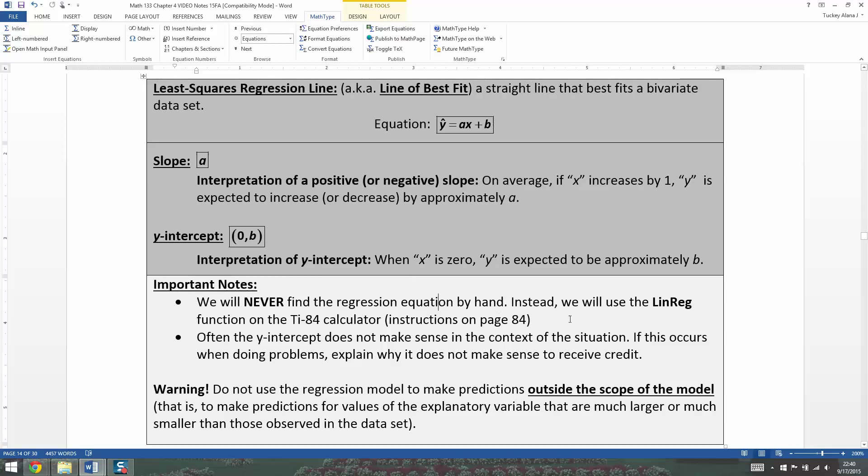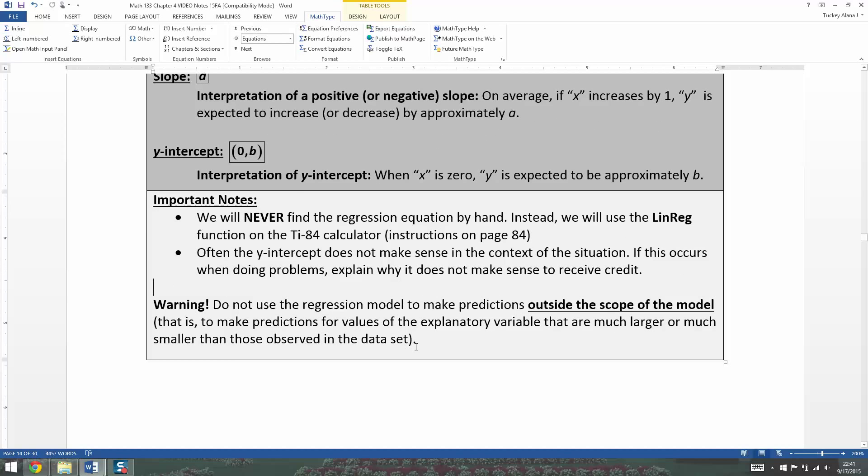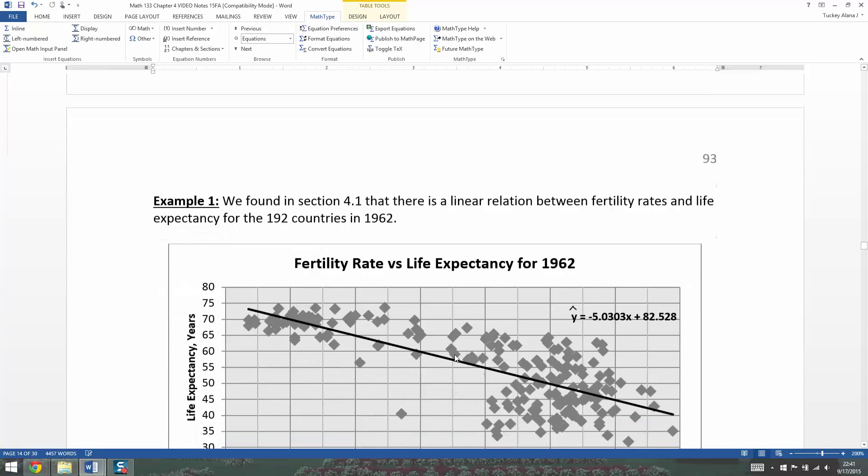Now, we in this class are not going to find this regression equation by hand. We're going to use the calculator to do it for us, the TI-84 calculator to be specific. And then the y-intercept for our course often doesn't make a lot of sense in the context of the situation. So if that occurs to you, you can either explain the y-intercept and then say it doesn't make sense to get some credit for it. Now, do not use the regression model to make predictions outside the scope of the model. The thing about our regression model is that when you use it, it's giving you your trend. It can be dangerous to get far away from your actual data. If the explanatory variable values are much larger or smaller than those observed in the data set, you can make predictions that are wildly inaccurate. We'll see what that means when we look at an example.